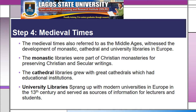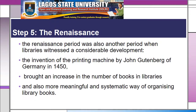Another period in library development was the Medieval time. During the Medieval time, there were three major types of libraries: the monastic, the cathedral, and the university libraries. This period also saw considerable development, as the invention of the printing machine by Johann Gutenberg of Germany brought an increase in the number of books and a more meaningful and systematic way of organizing library books.